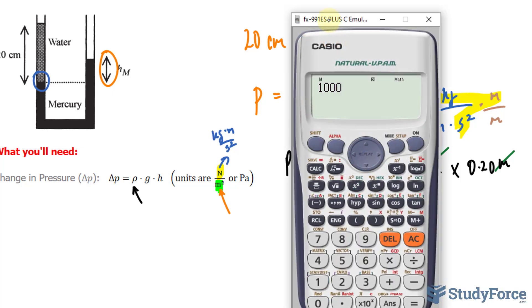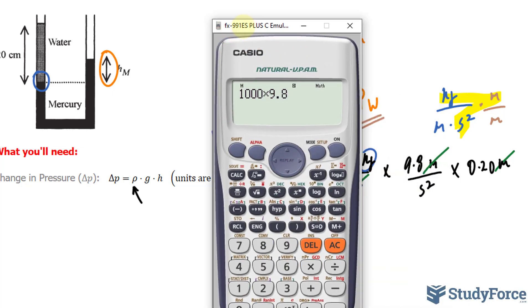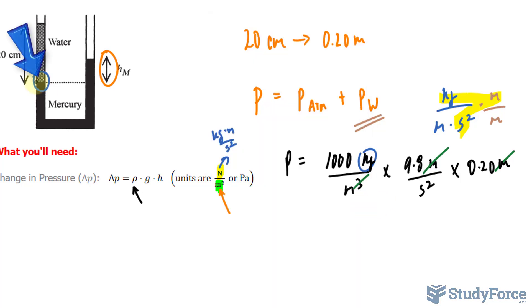So I have 1,000 times 9.8 times 0.20, and that is the pressure right there neglecting atmospheric pressure. 1, 9, 6, 0 newtons per meters squared.